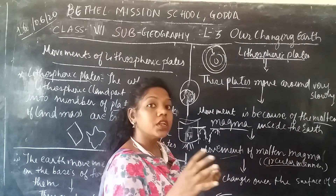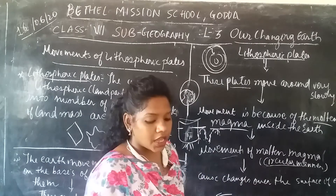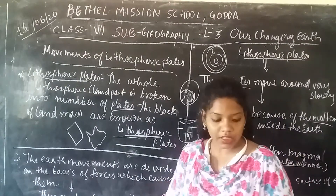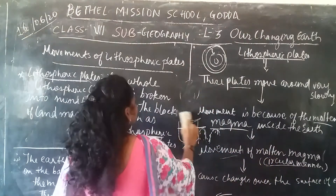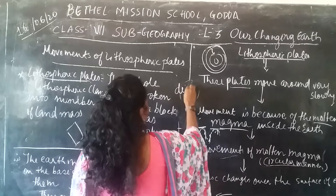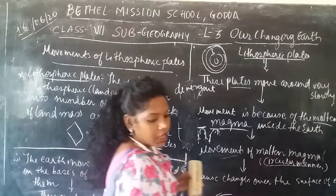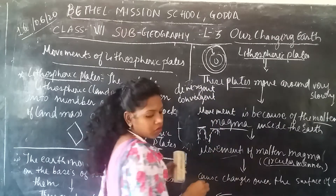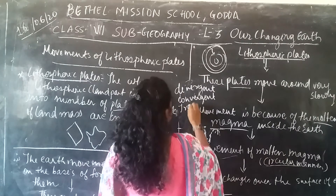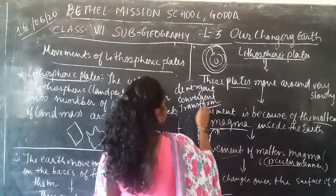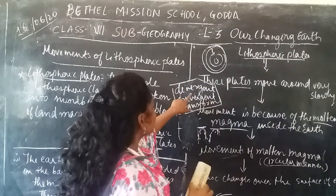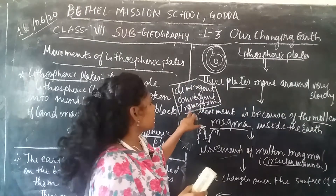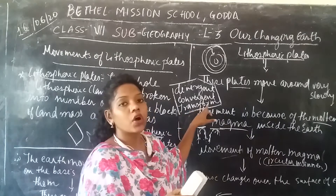This is how the lithospheric plates move. The plates move in three ways. One is divergent, one is convergent, and one is transform. Divergent is spelled D-I-V-E-R-G-E-N-T, convergent is C-O-N-V-E-R-G-E-N-T, and transform is T-R-A-N-S-F-O-R-M.